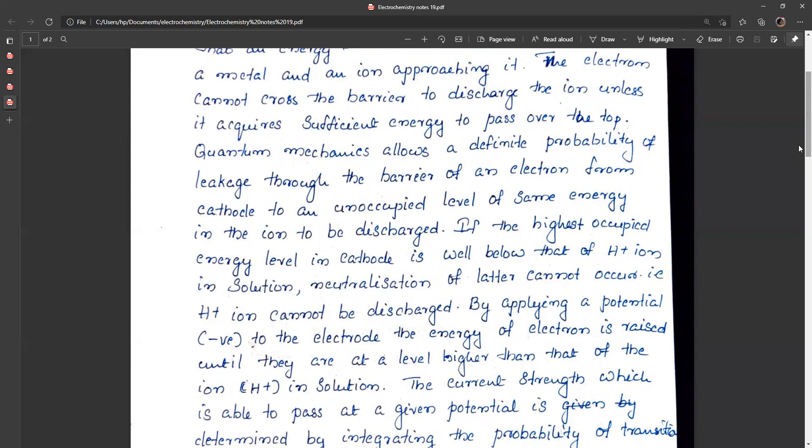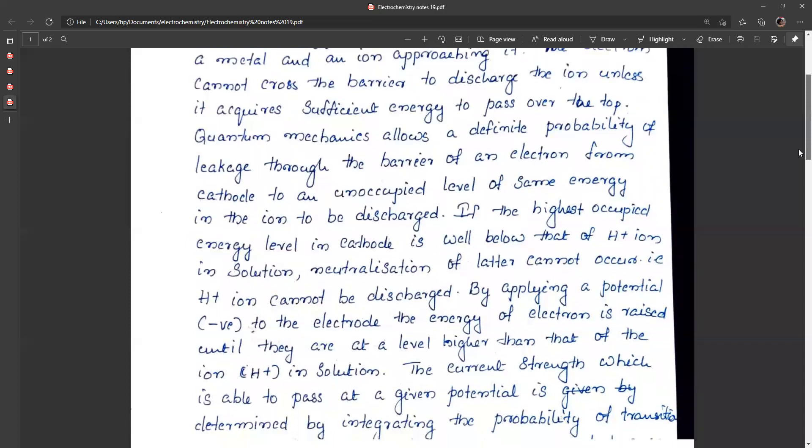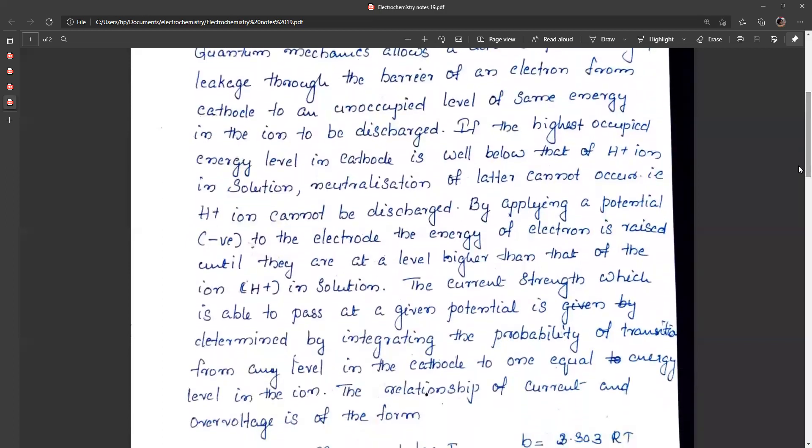By applying a certain potential, usually negative to the electrode, the energy of electrons in cathode is raised until they are at a level higher than that of H+ ion in solution. The current strength which is able to pass at a given potential is determined by integrating the probability of transition from any level in the cathode to one equal energy level in the ion.